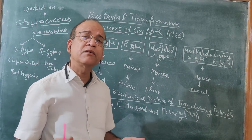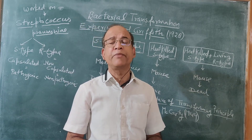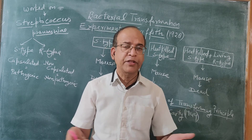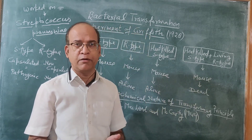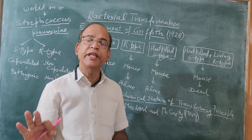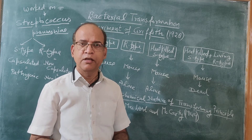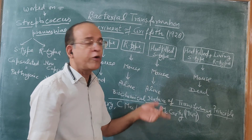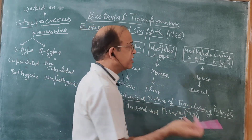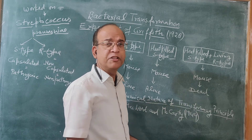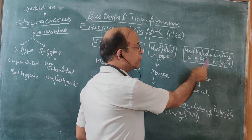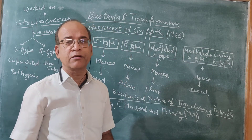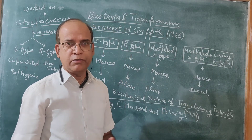But what was the biochemical nature of that genetic material? Griffith called it the transforming principle. He didn't give the term DNA or anything else — he simply said something is transferred, that transforming principle is transferred from S-type to R-type. But what was the biochemical nature of that transforming principle, he could not explain.